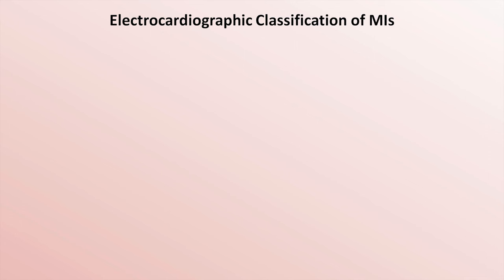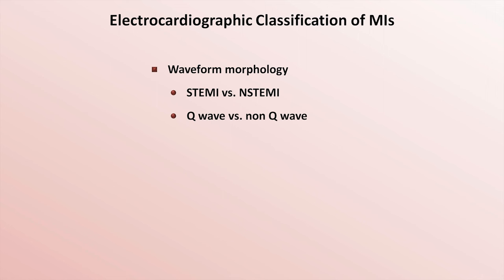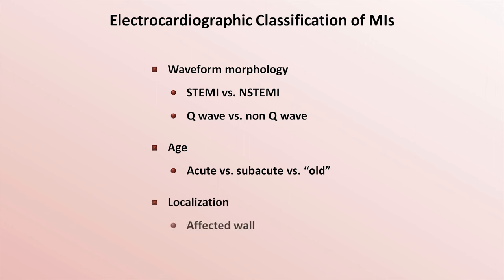MIs can electrocardiographically be classified in various different ways. They can be classified based on waveform morphology, such as STEMI vs. N-STEMI, or Q-wave vs. non-Q-wave. They can be classified based on age, such as acute vs. subacute vs. old. Finally, they can also be classified based upon localization to an affected wall or to a culprit coronary vessel.